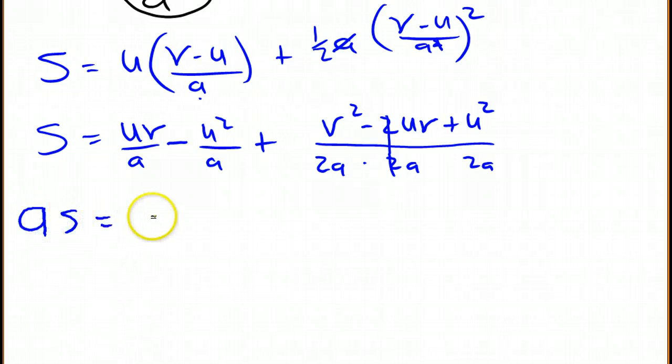So I have as equals u times v minus u squared plus v squared over 2 minus uv plus u squared over 2.